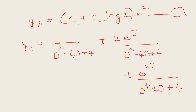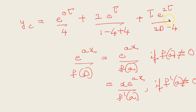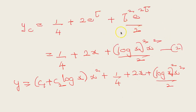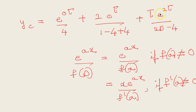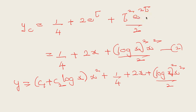Applying the formula again for te^(2t)/(2D−4): substituting D = 2 again gives 0, so we get t²e^(2t)/2. The particular integral becomes 1/4 + 2e^t + (t²/2)e^(2t). Back-substituting e^t = x and t = log x, the particular integral is 1/4 + 2x + (log x)² × x²/2. The complete solution is y = (c₁ + c₂ log x)x² + 1/4 + 2x + (log x)²x²/2.